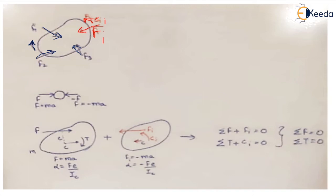The condition for static equilibrium states that summation of forces should equal zero and summation of torques should equal zero. So if the externally applied forces are equal and opposite to the inertia force, and the externally applied moment is equal and opposite to the inertia moment, then the system will be in static equilibrium.